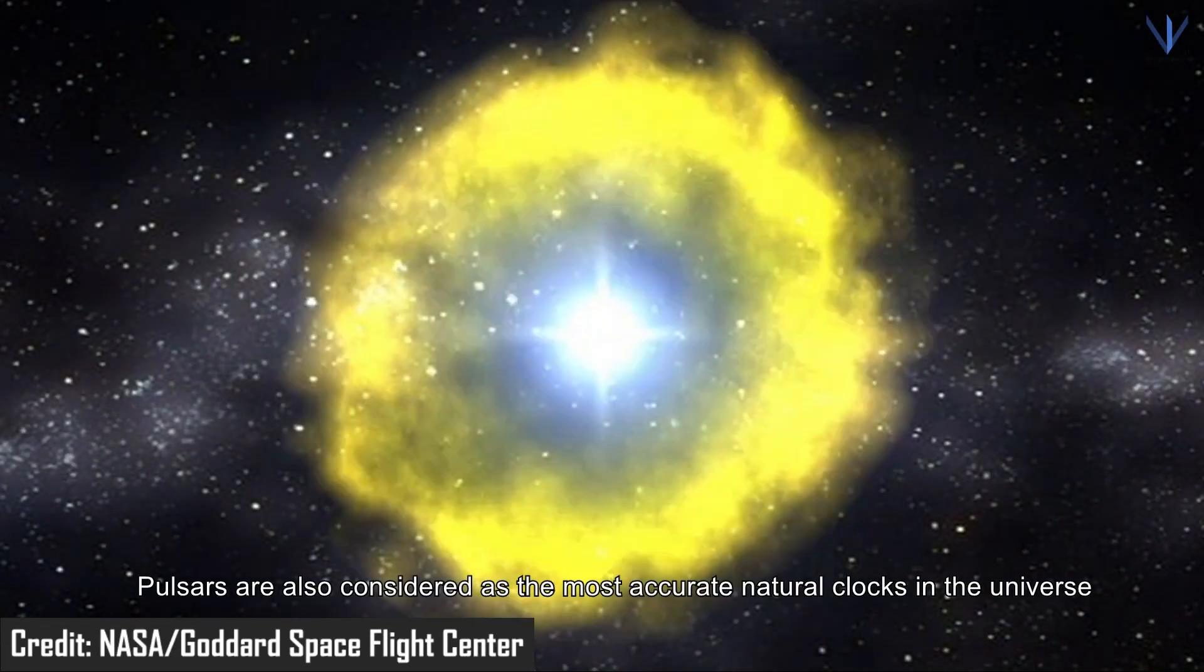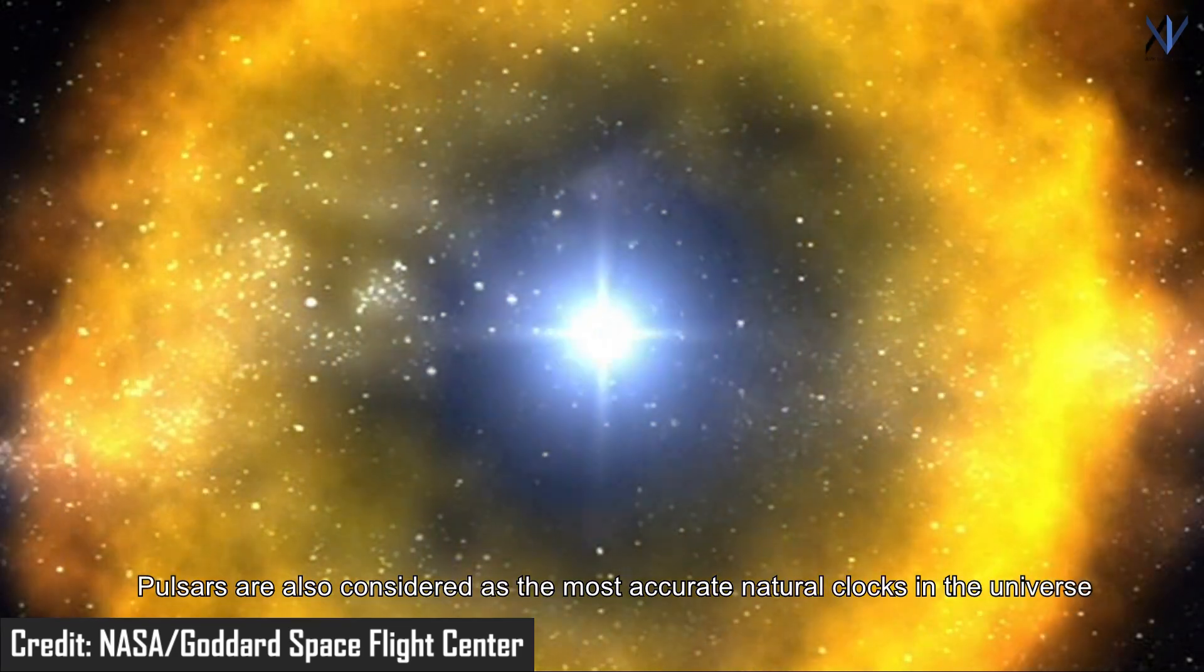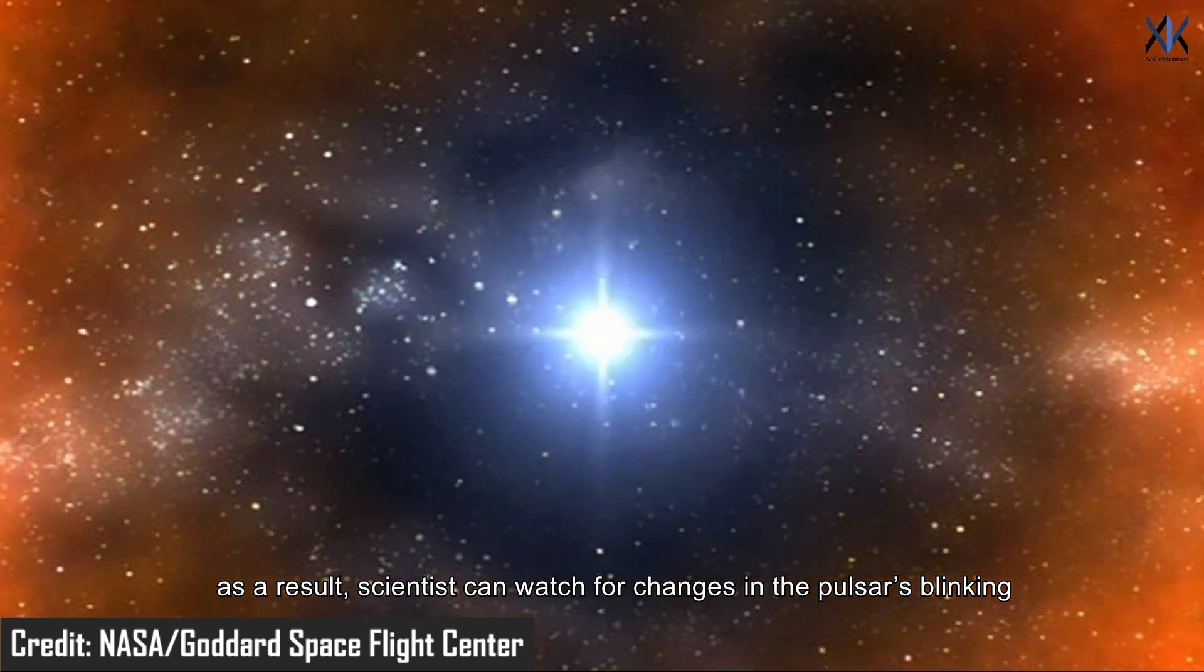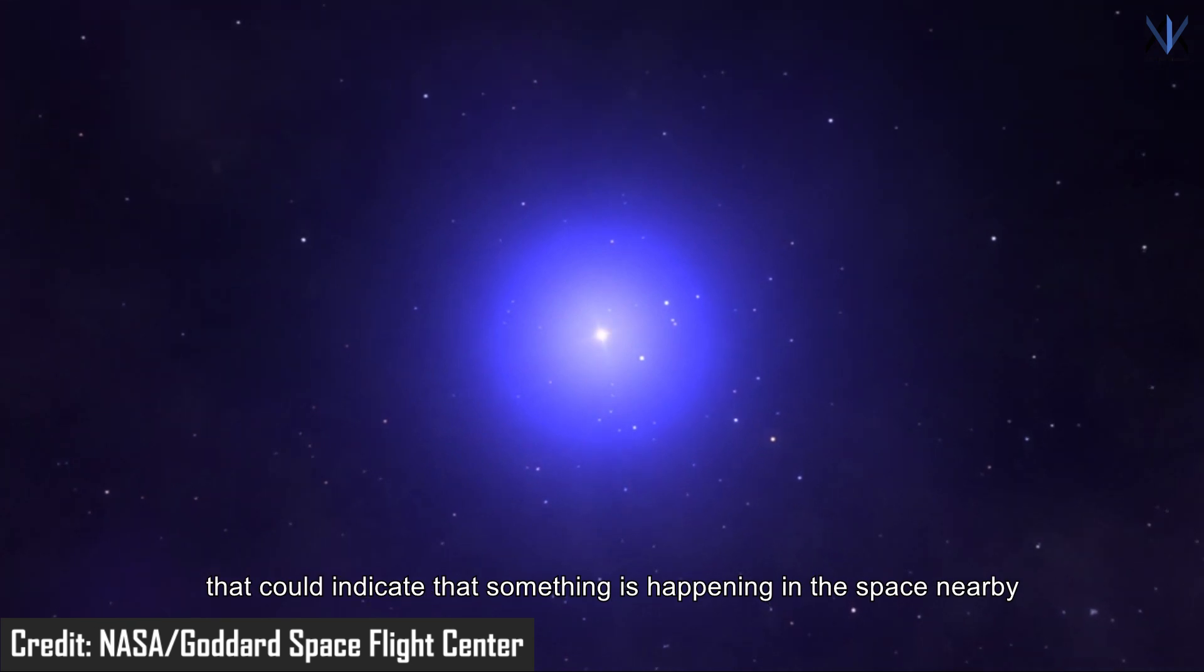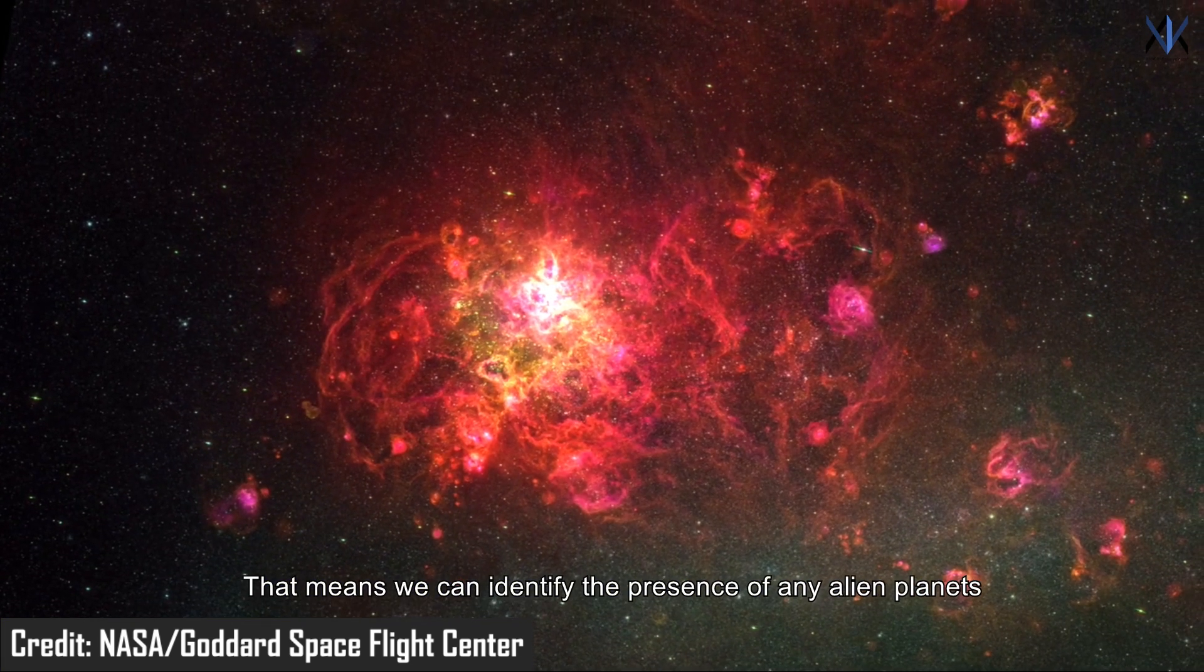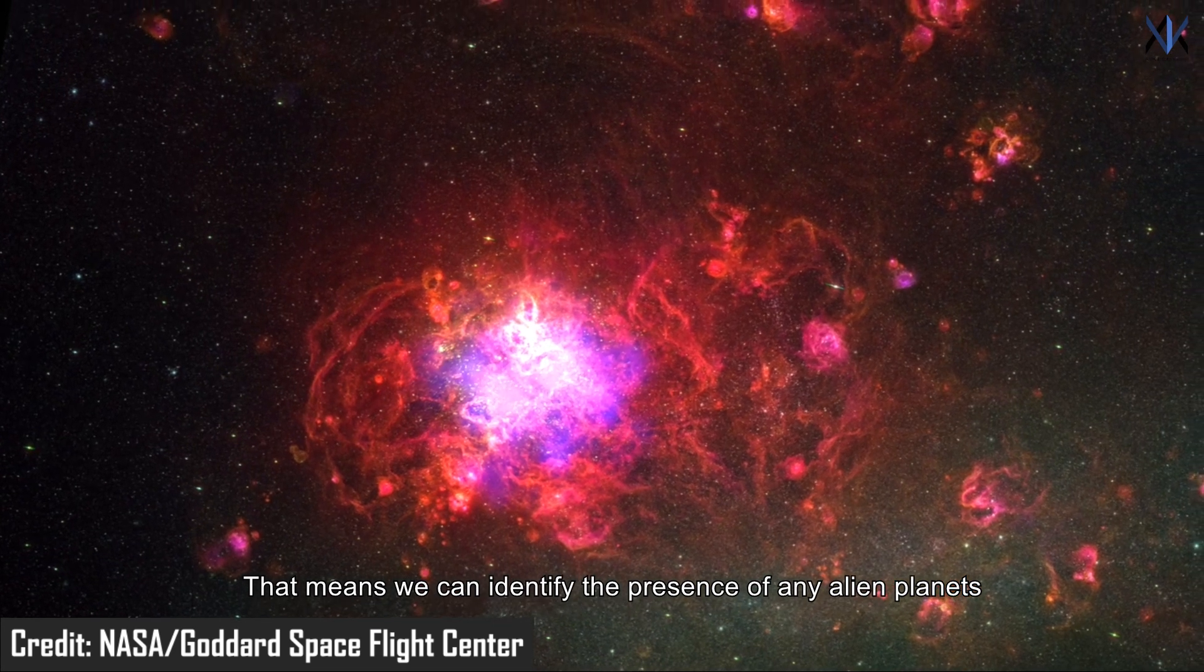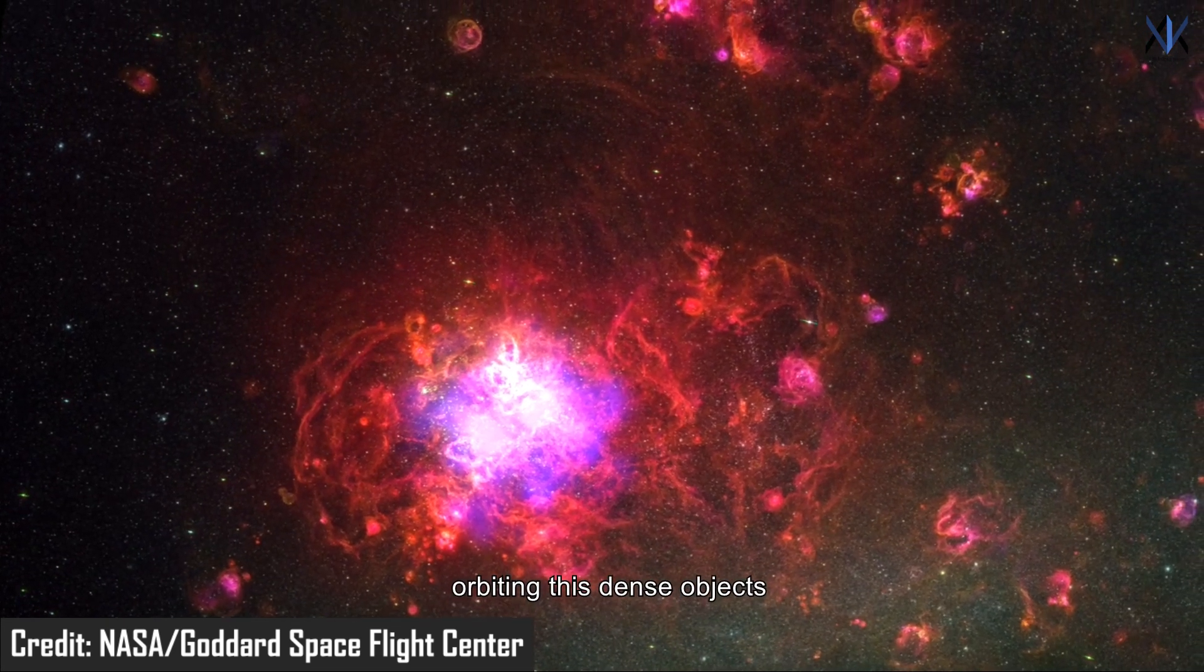Pulsars are also considered the most accurate natural clocks in the universe. As a result, scientists can watch for changes in a pulsar's blinking that could indicate that something is happening in the space nearby. That means we can identify the presence of alien planets orbiting these dense objects.